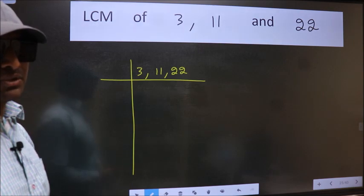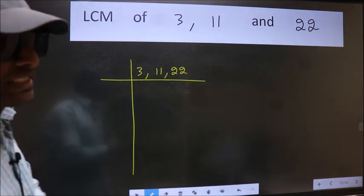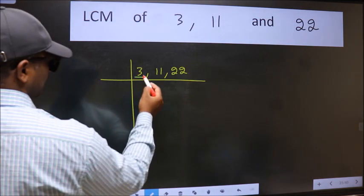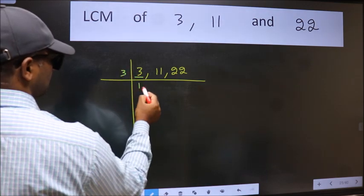Now we should focus on the first number which is 3 here. 3 is a prime number so 3 wants 3.